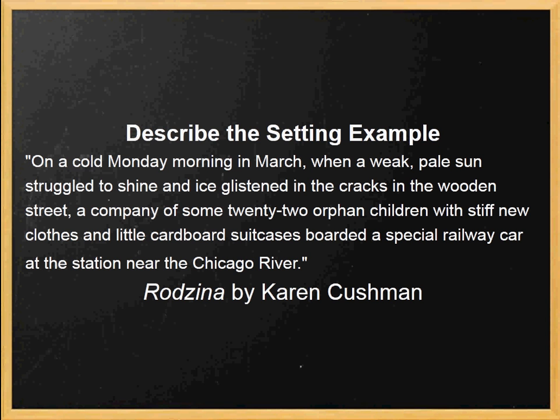An example is from Rodzina by Karen Cushman. The first paragraph reads: 'On a cold Monday morning in March, when a weak pale sun struggled to shine and ice glistened in the cracks in the wooden street, a company of some 22 orphaned children with stiff new clothes and little cardboard suitcases boarded a special railway car at the station near the Chicago River.' This does a great job of telling the audience when and where the story takes place — it's March, cold weather, near the Chicago River.